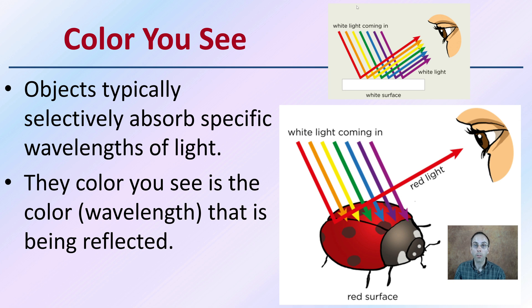The color you see is the color or wavelength that is being reflected. In the case of a white surface, all white light is coming in and all the wavelengths are being reflected off that surface, and we interpret that as white coloration. If you take white light and put it through a prism, you can separate it out into the different wavelengths, and when we start seeing colors, we're seeing the color that is reflected.